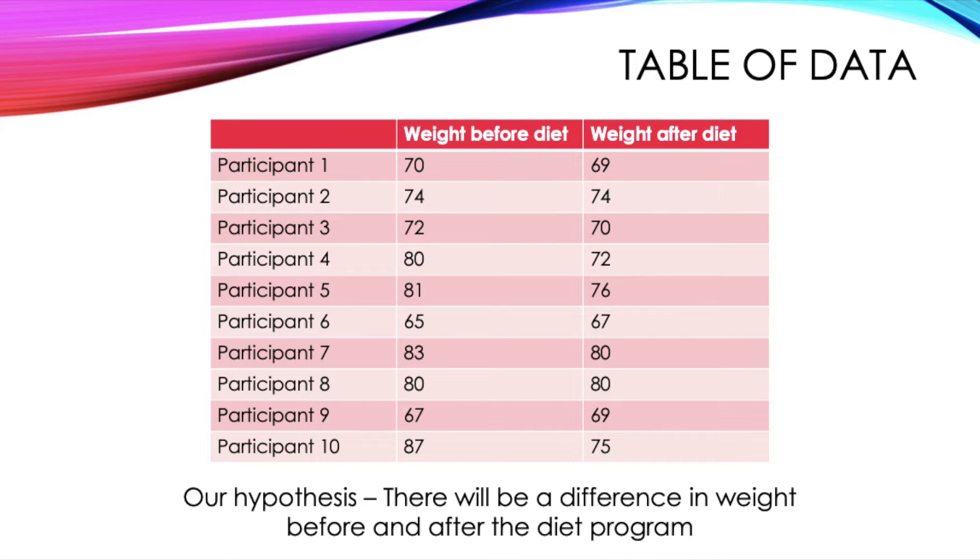Our hypothesis is that there will be a difference in weight before and after the program. It's important to note that this is a two-tailed hypothesis because I didn't directly say how the weight would change, I just said that there would be a weight change. If a question were to ask you to create a set of hypotheses, this would be an experimental hypothesis. You may also want to create a null hypothesis which would simply say that there will be no difference in weight before and after the diet program.